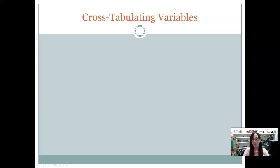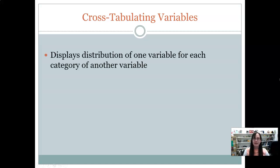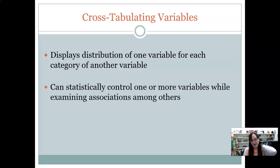Crosstabulation is one way that we can start to look at the relationship between two variables. Crosstabulation, or crosstabs, is one way of starting to see if there's relationships between two variables. Essentially what a crosstab does is it displays the distribution of one variable for each category of the other variable. This allows us to basically control one variable while looking at the association between other variables or between different levels.